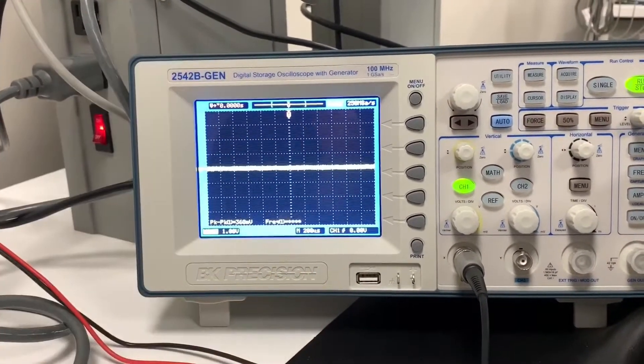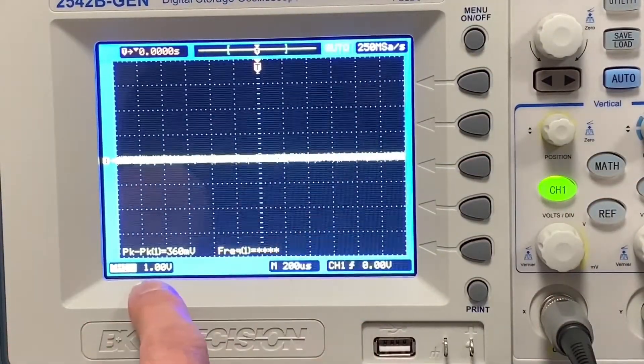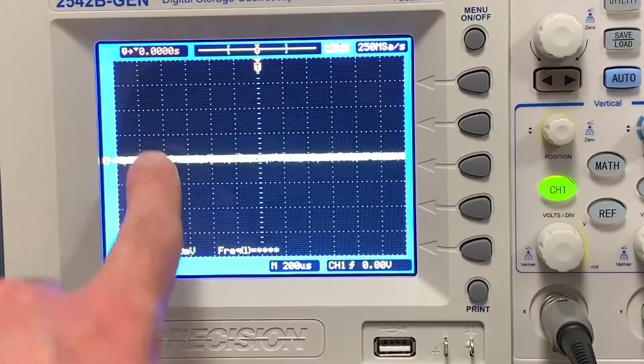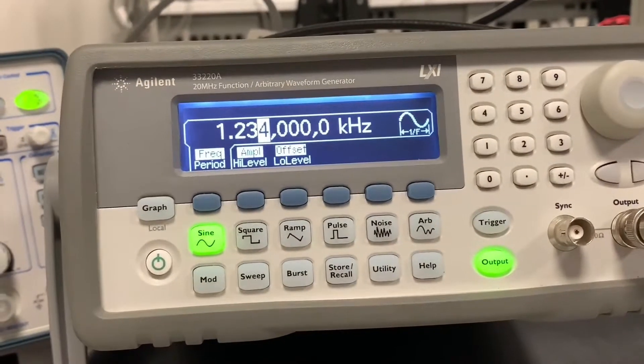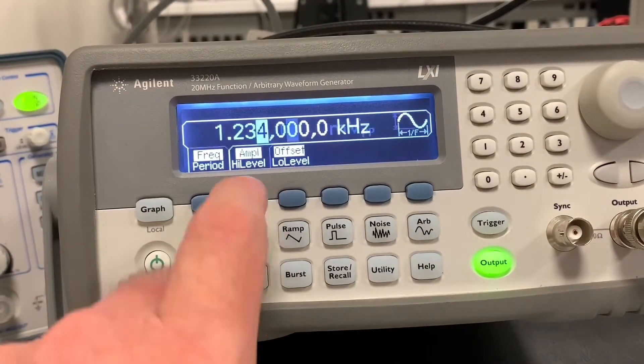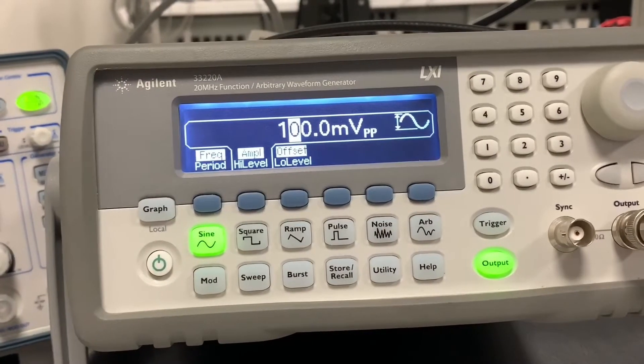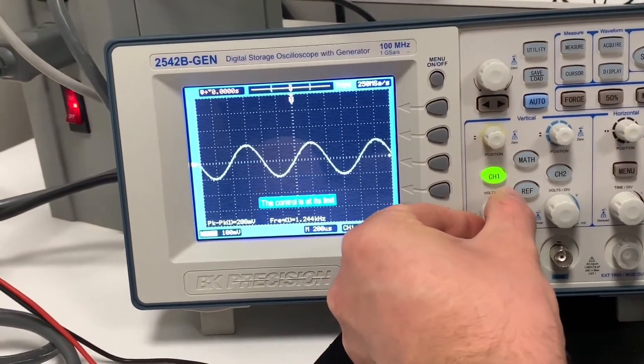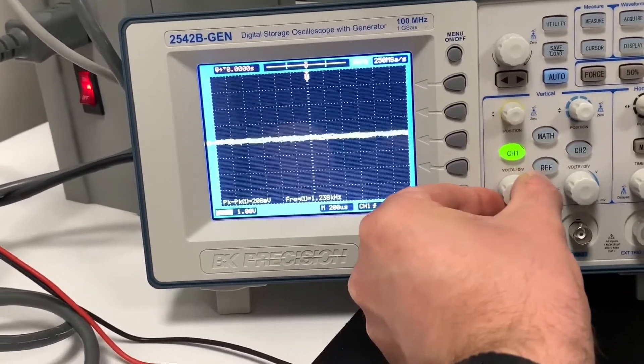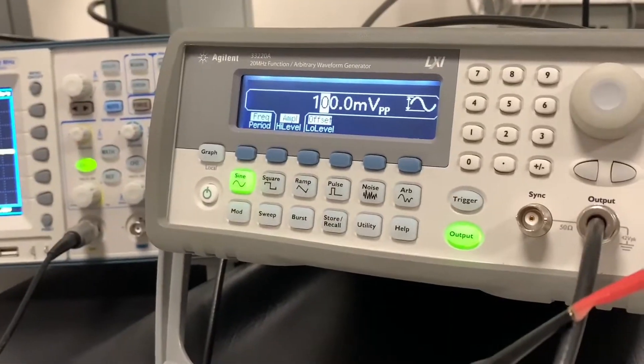scope is set to one volt per division. And the signal that's being put out is too low in this mode. See right here, the scope is at one volt per division. So each box is one volt. But if we look at our function generator and click on the amplitude tab, you can see that it's only putting out 100 millivolts peak to peak. So what we could either do is change the oscilloscope vertical axis to zoom in some more, and we can see our signal there, or leave it at one volt.